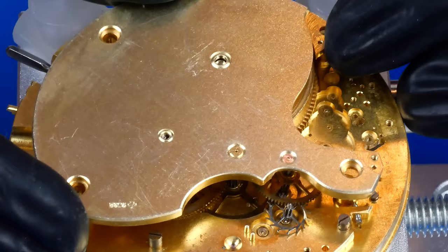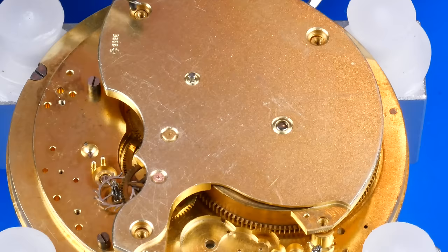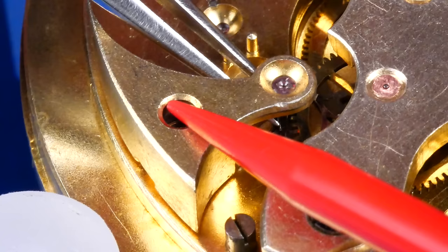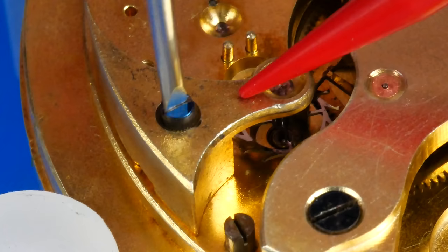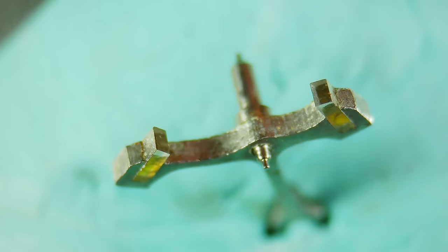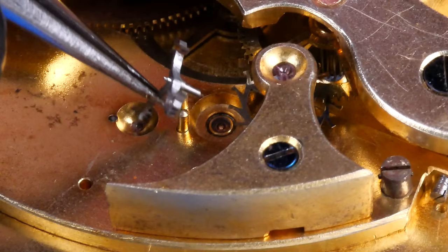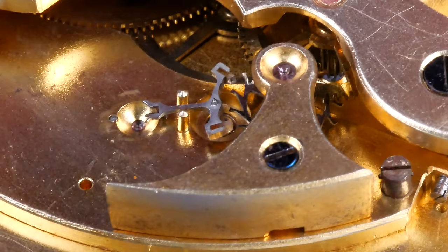Finally, the train bridge can be lowered into place, carefully ensuring all pivots are seated before tightening it down. The escape wheel cock is reinstalled. Mobius 941 lightly greases the faces of the pallet stones that meet the edges of the escape wheel teeth. And now the pallet cock can be reinstalled, again taking care to ensure the delicate pivots of the pallet fork are properly seated in their respective holes.